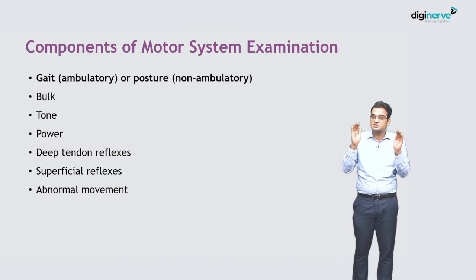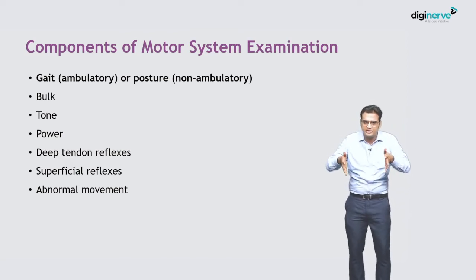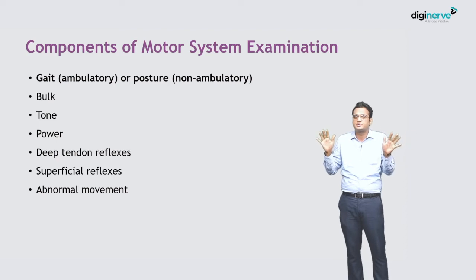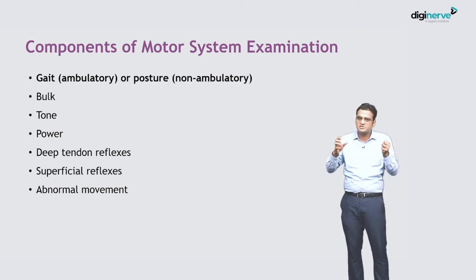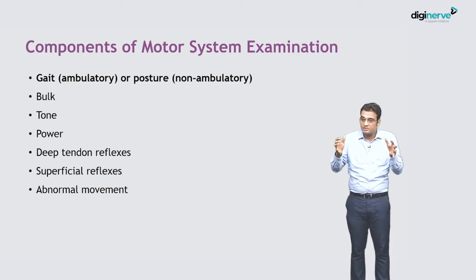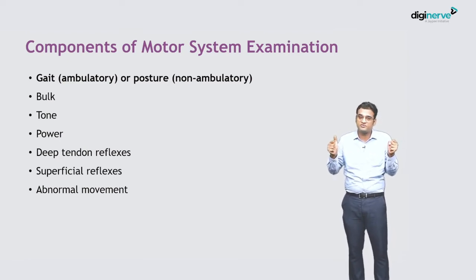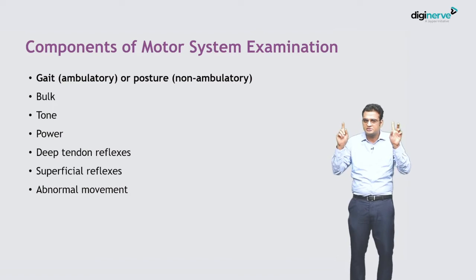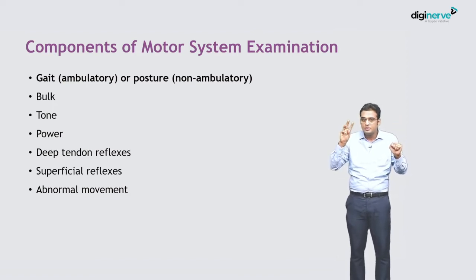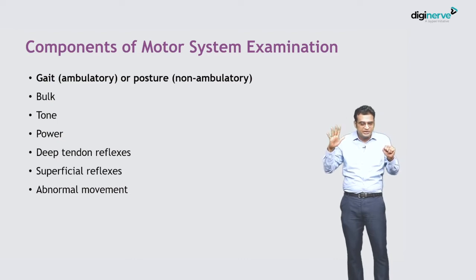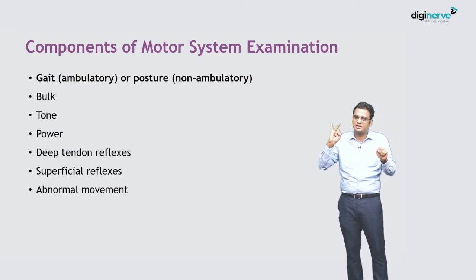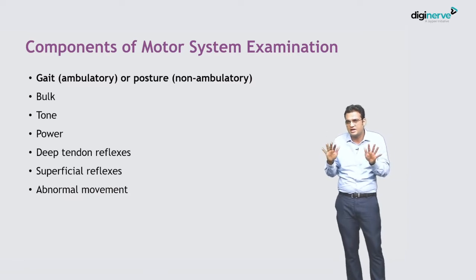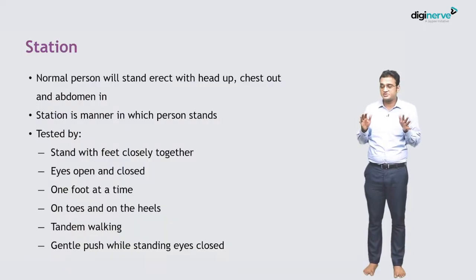What are the components of motor system examination? There are around seven components: the first is gait in ambulatory patients and posture in non-ambulatory patients, then we describe the bulk of the muscles, tone, power, deep tendon reflexes, superficial reflexes, and abnormal movements if there are any. So the seven titles are: gait or posture, bulk, tone, power, deep tendon reflexes, superficial reflexes, and abnormal movement.